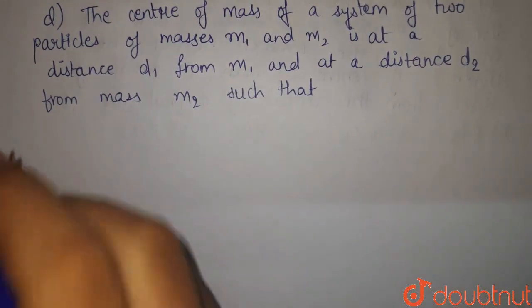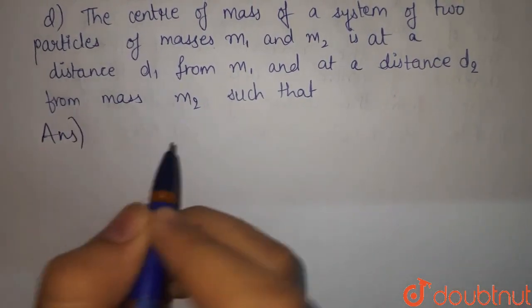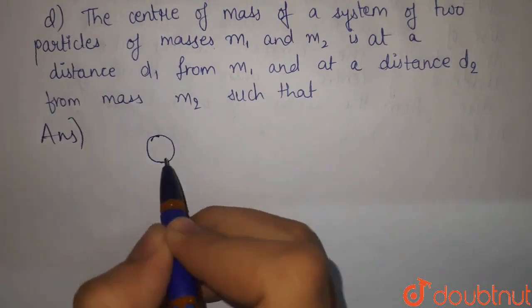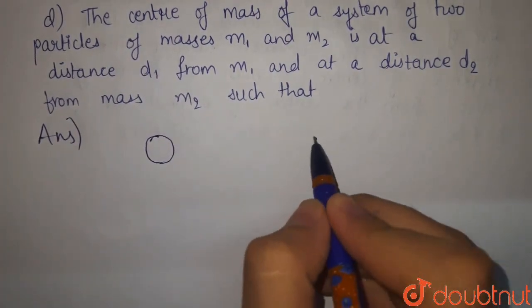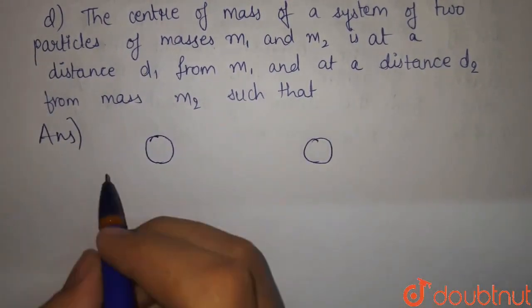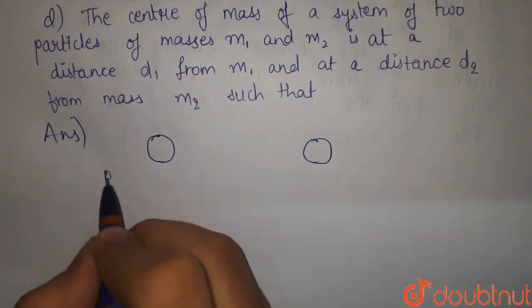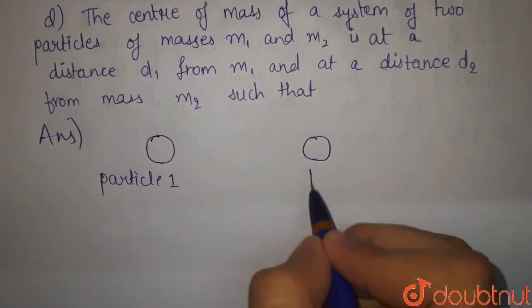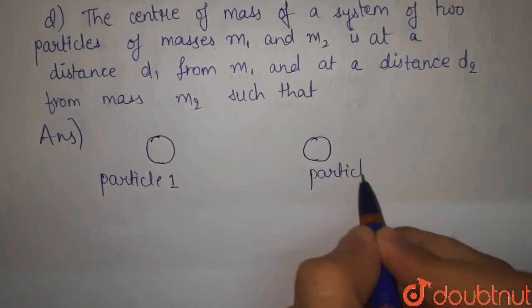The question says we have a system of two particles. Let's say, here is our particle 1 and here is our particle 2. This is particle 1, this is particle 2.